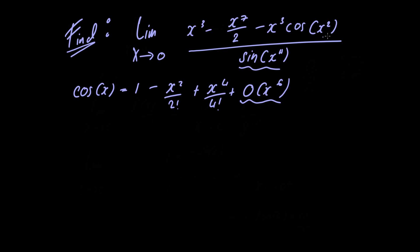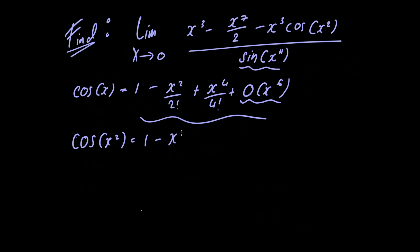Now we have cosine of x squared in the numerator, so we're going to insert x squared everywhere we have x. So cosine of x squared equals 1 minus x to the 4th power divided by 2 factorial, plus x to the 8th power divided by 4 factorial, plus O of x to the 12th power.